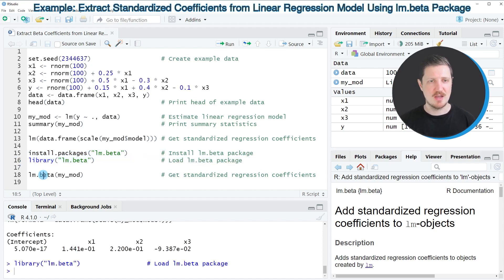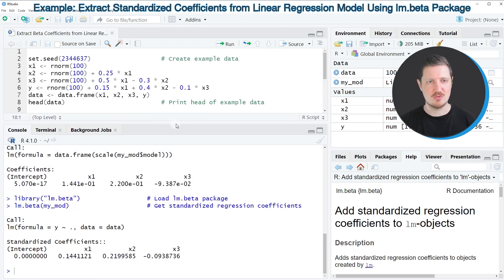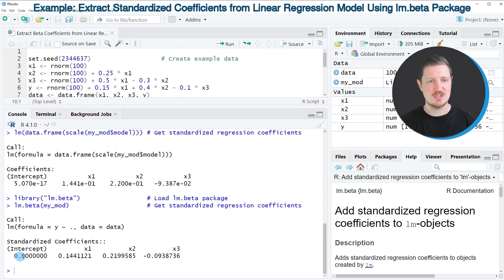And now we can use the lm.beta function of the lm.beta package and we can apply this function to our model object that we have created in line 10. So after running line 18 of the code you can see that another output is returned and this output is also showing the standardized regression coefficients. And as you can see these coefficients are basically the same as in the previous output.